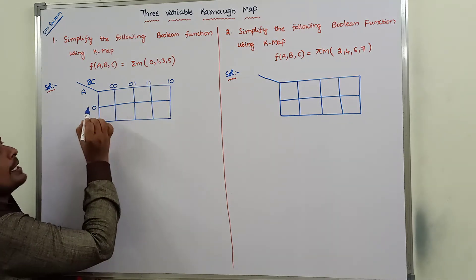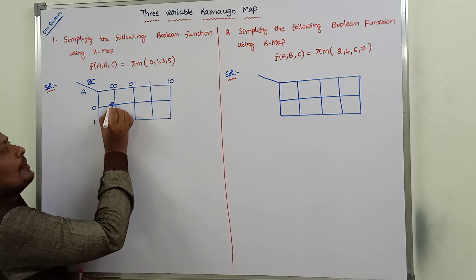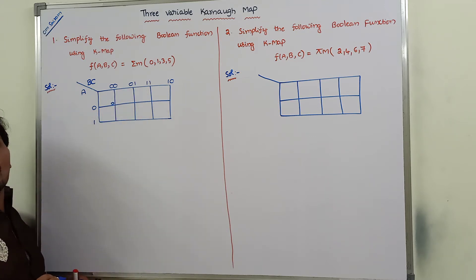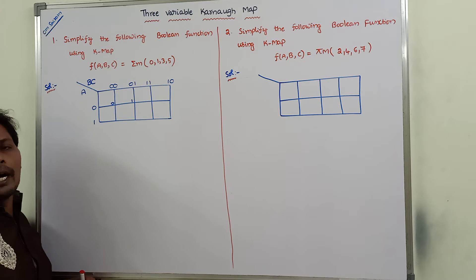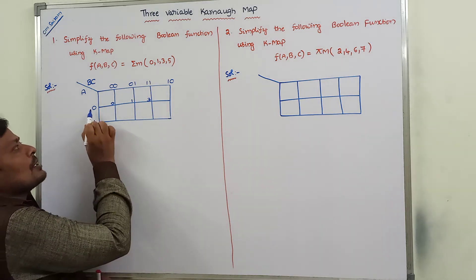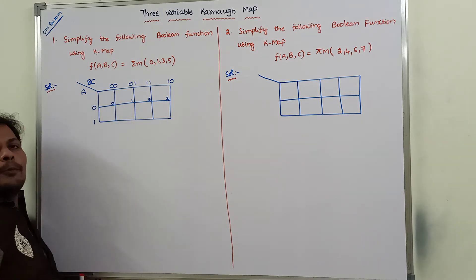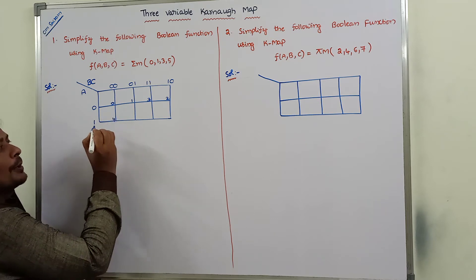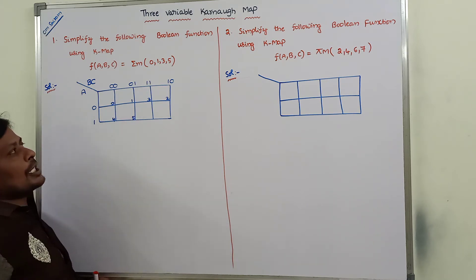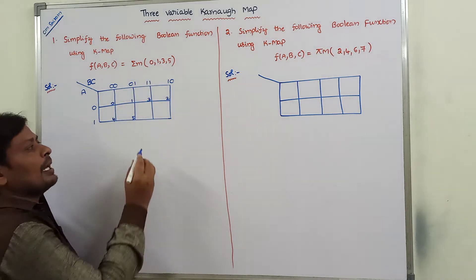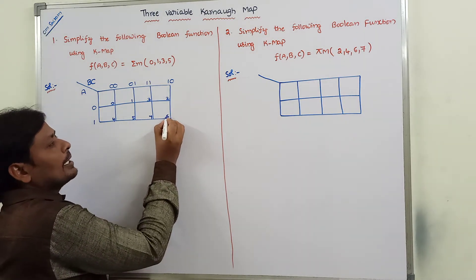This cell represents 000, decimal equivalent 0. Next, 001 — decimal equivalent 1. Next, 011 — decimal equivalent 3. Next, 010 — decimal equivalent 2. Next, 100 — decimal equivalent 4. Next, 101 — decimal equivalent 5. Next, 111 — decimal equivalent 7. Next, 110 — decimal equivalent 6.